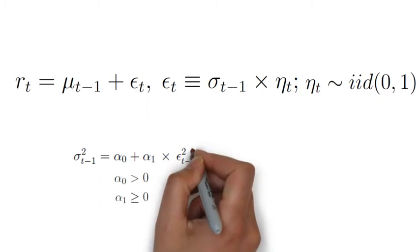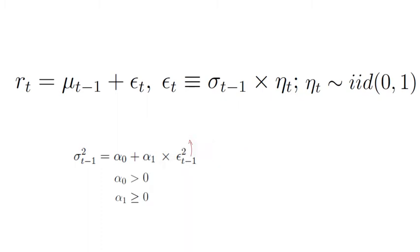So if the last return shock was large, you assume that the probability of observing another large return shock is increasing. On the other hand, if you set alpha_0 to 0 and alpha_1 to 1, you end up with sigma squared_{t-1} equals epsilon squared_{t-1}. That expression highlights that assuming variance to coincide with squared residuals is consistent with a special ARCH1 model — and remember, the tests for detecting ARCH effects worked with squared residuals as a proxy for variance.